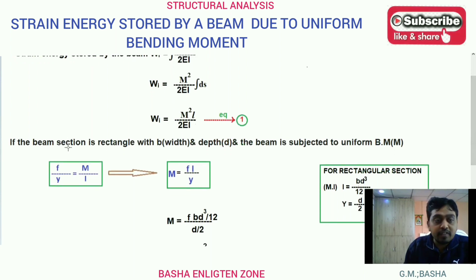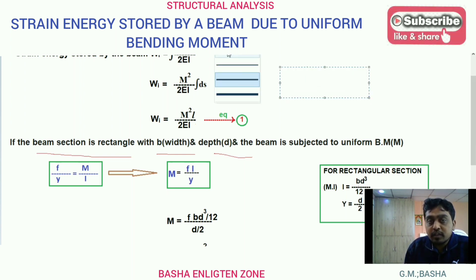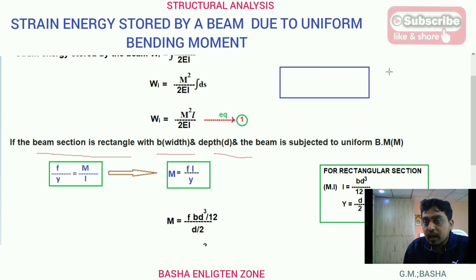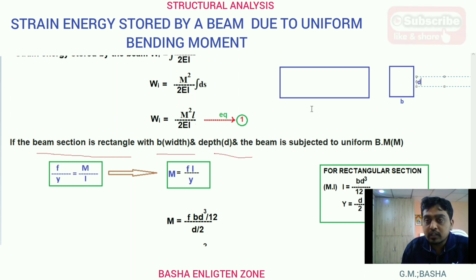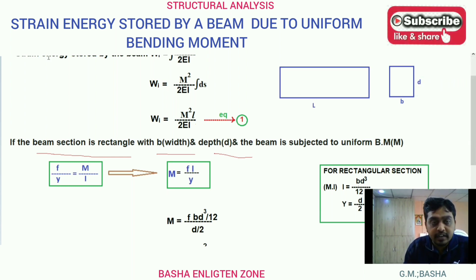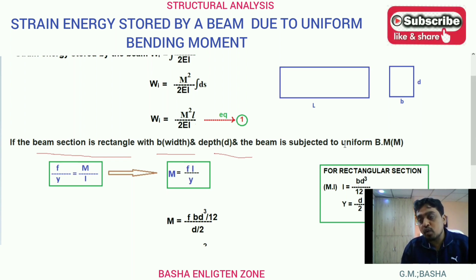Now, if the beam section is a rectangle with width b and depth d, and the beam is subjected to uniform bending moment, the formula will be: strain energy Wi equals M squared ds by 2EI. For the whole beam, we integrate from 0 to L. I gave the link to the previous video in the description — please watch that for a clear idea on strain energy stored by the beam.